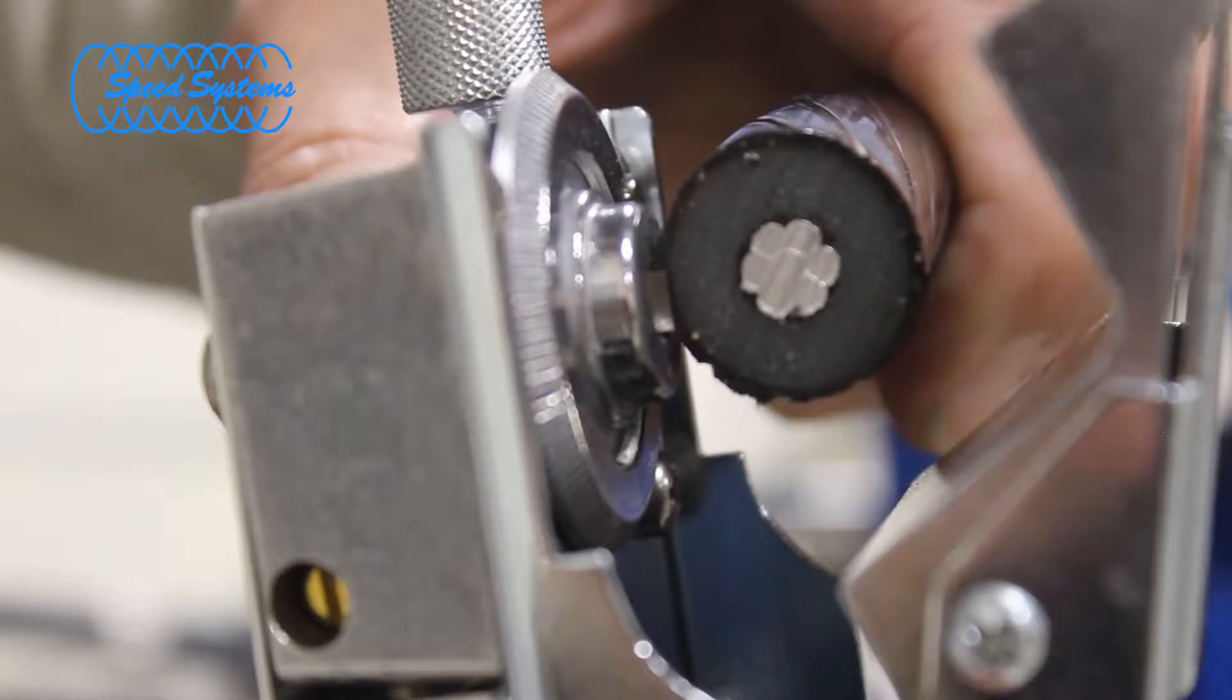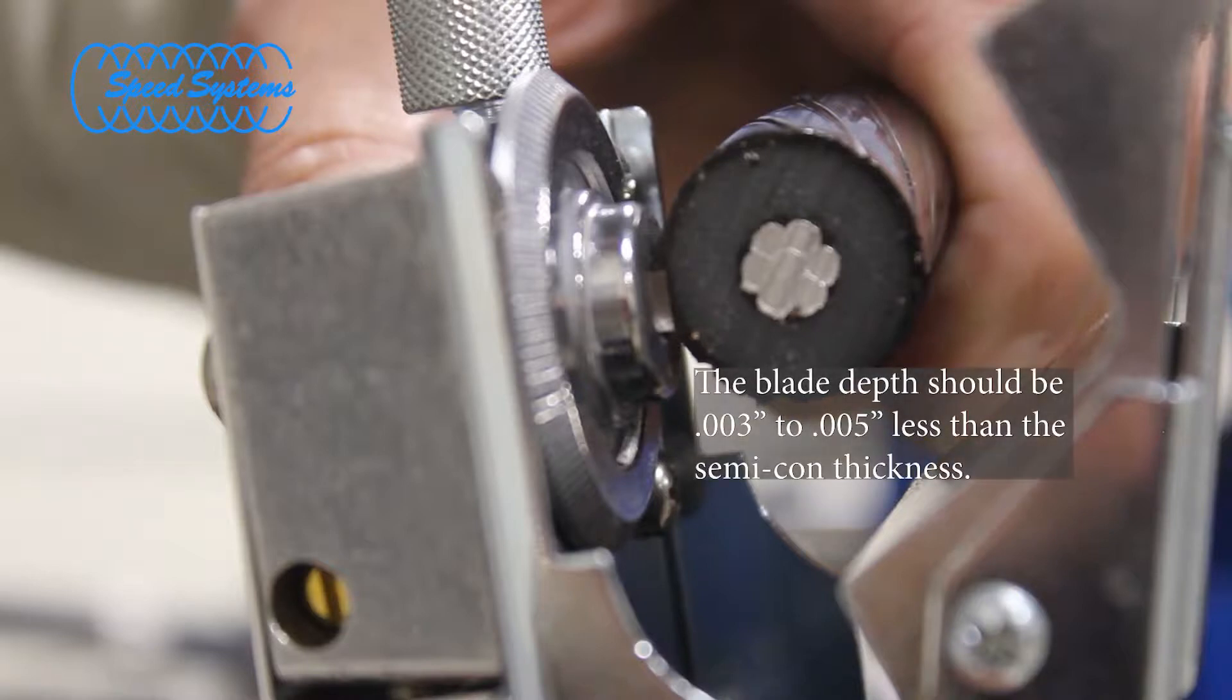Check the blade depth on a scrap piece of cable if one is available or by visually checking the blade at the end of the cable. The blade depth should be set to approximately 3 to 5 thousandths inch less than the SEMICON thickness.